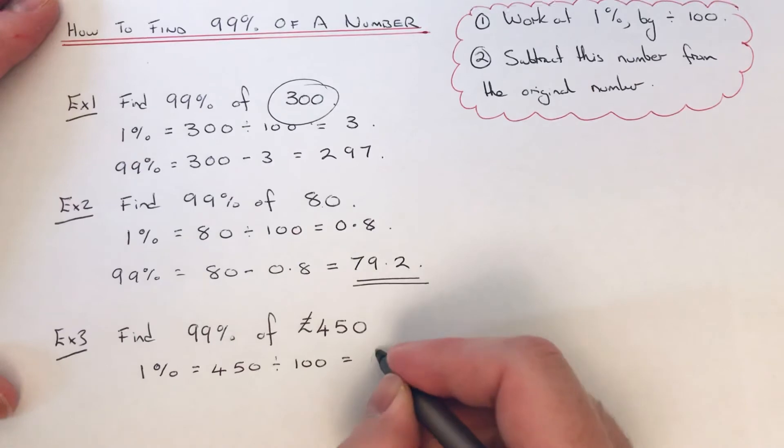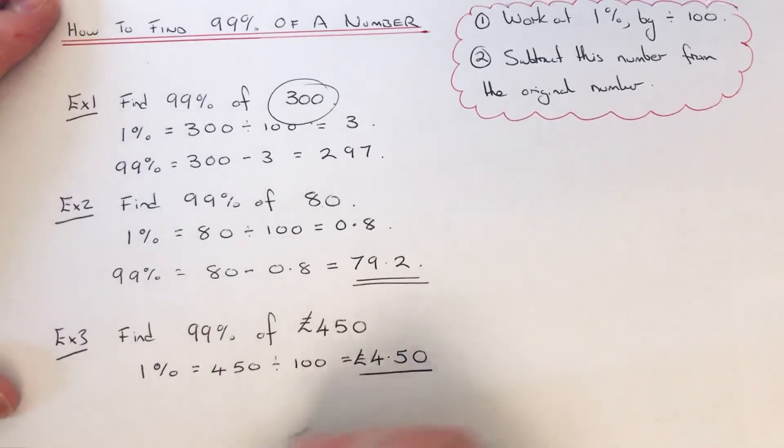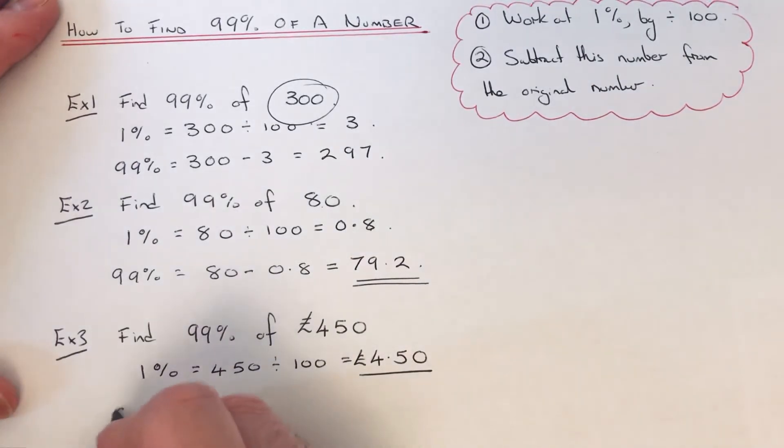So that gives us 4.5 or 4 pounds 50 because it was a money question. So we then need to subtract the 4 pounds 50 off 450 pounds.